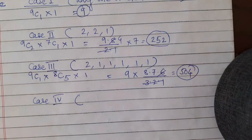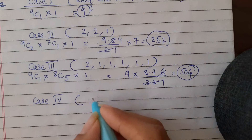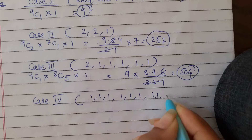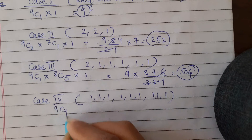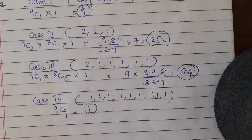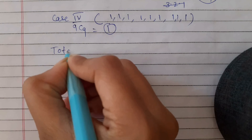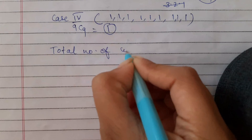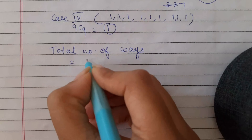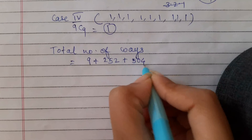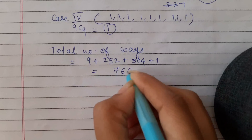Case 4: when all nine elements are equal to 1. The sum 1² × 9 = 9. This gives exactly 1 way. Therefore, the total number of ways is 9 + 252 + 504 + 1 = 766.